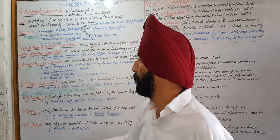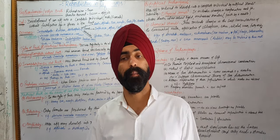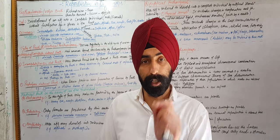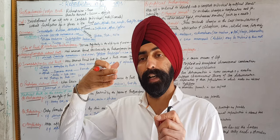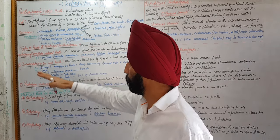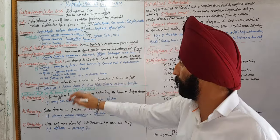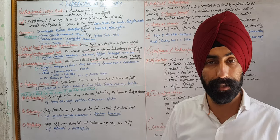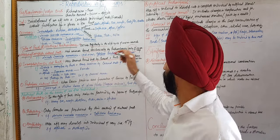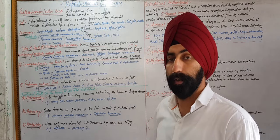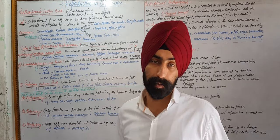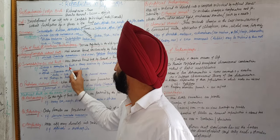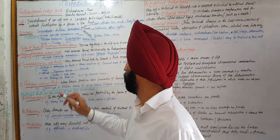The second type of natural parthenogenesis is incomplete or cyclic parthenogenesis. Here the animal shows parthenogenesis as well as other means of reproduction. Animals breed by both bisexual and parthenogenetic means. Unlike obligatory parthenogenesis where only females are produced, here both sexes can be produced. Examples include the drone in the honeybee.